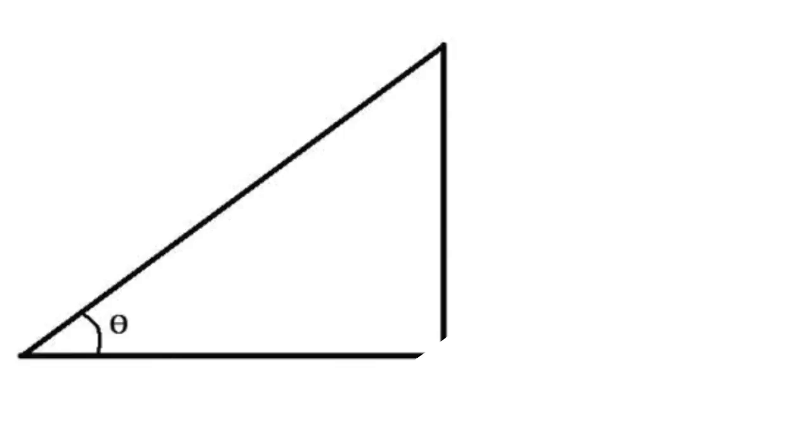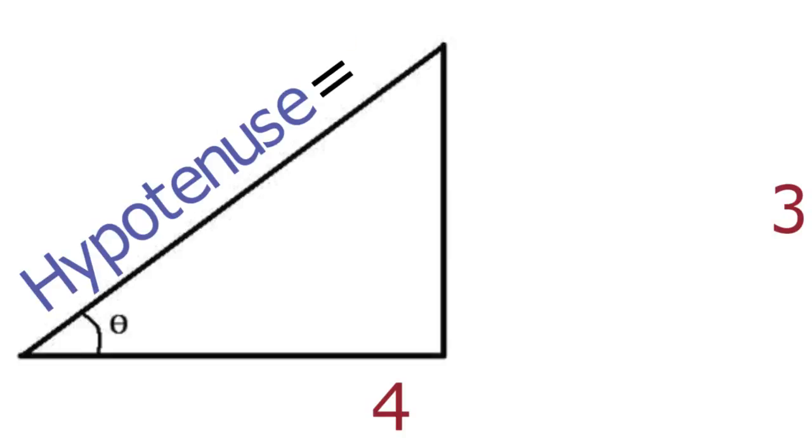For example, in this triangle, theta is the angle between the leg of the triangle with length 4 and the hypotenuse, which has a length of 5.